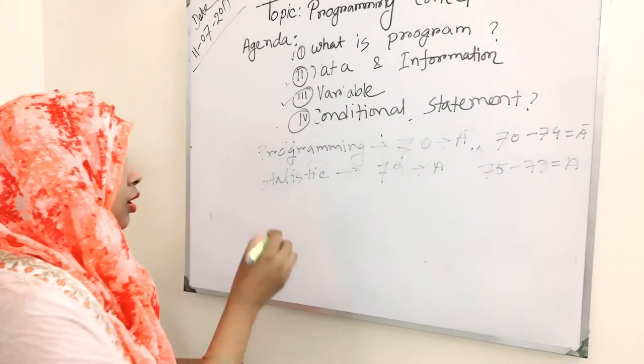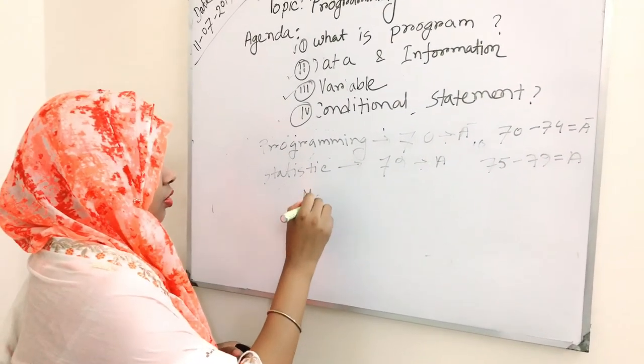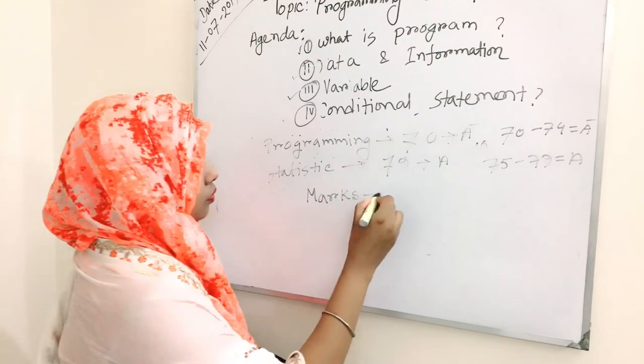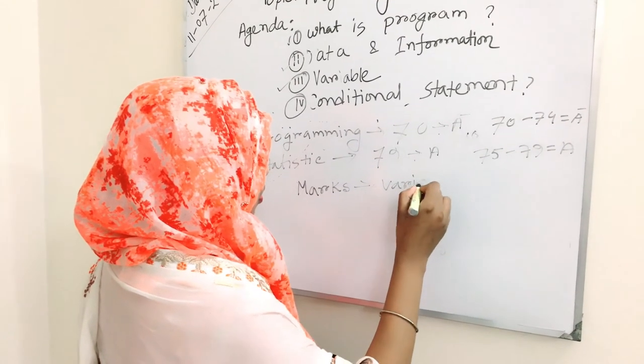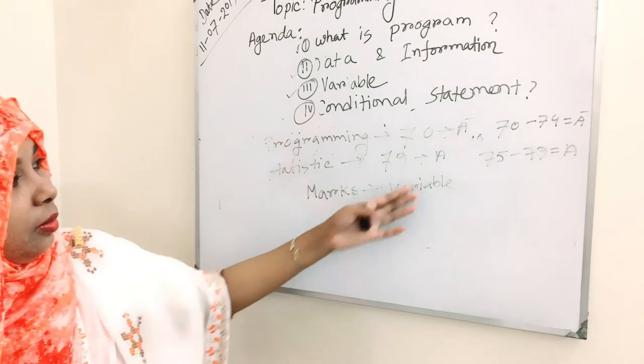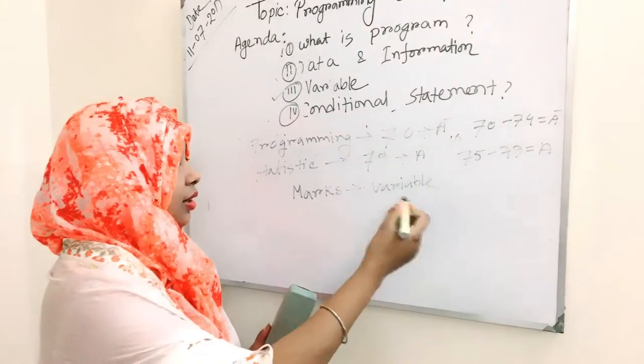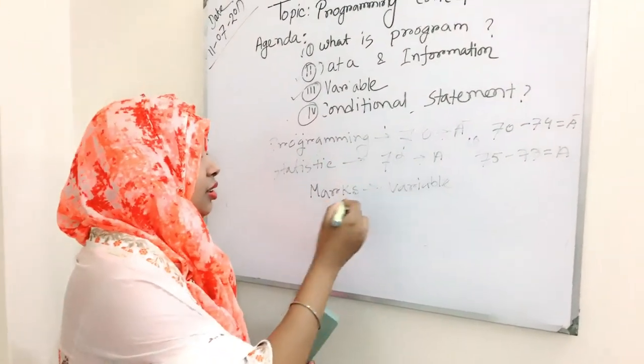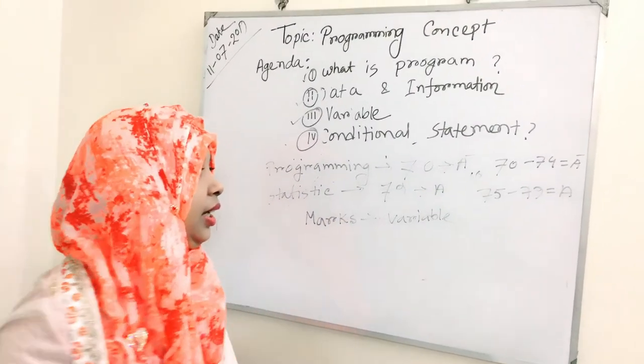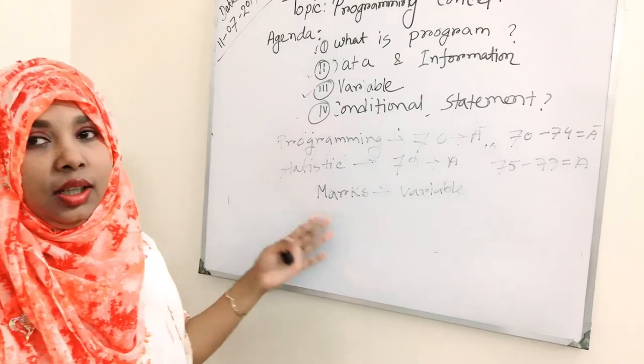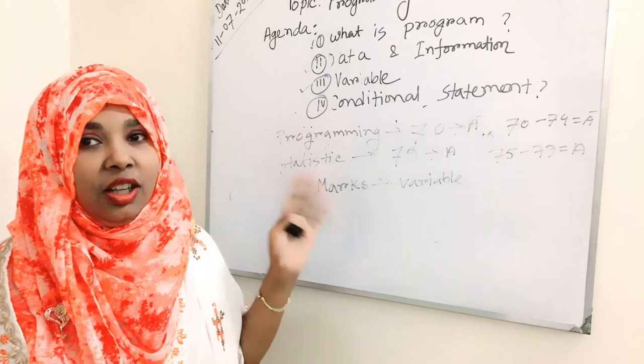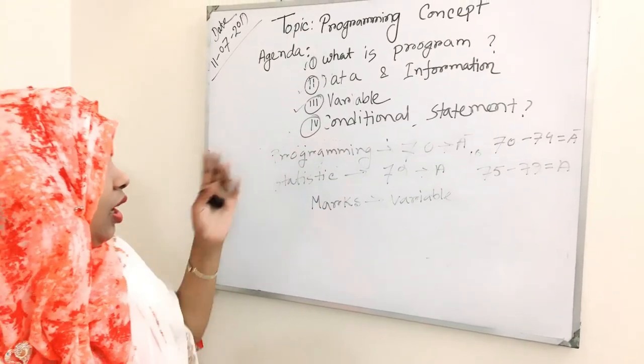So what is variable here? Here your marks is a variable. For the first time, the value of variable is A minus, and for statistics, the value of the variable marks is A. So it is changing on the condition. Here you can understand easily what is variable.